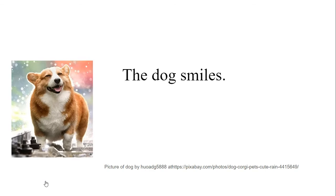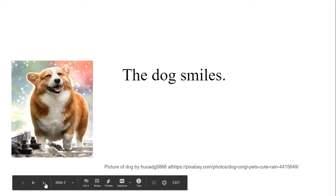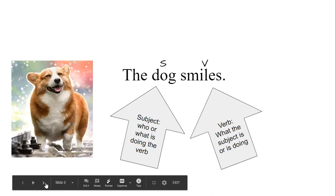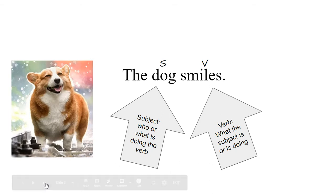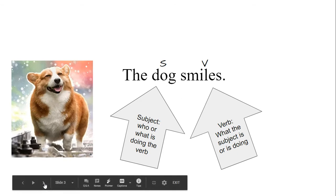For something to be grammatically complete, we have to have two things: a subject and a verb. In the sentence 'the dog smiles,' our subject is 'dog' and our verb is 'smiles.' The subject tells who or what is doing the verb, and the verb tells what the subject is or what the subject is doing. As long as we have those two things bound together, we've got a sentence.